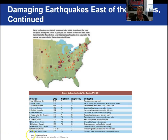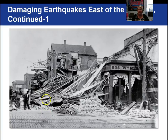Here is a list of 14 historic earthquakes with their dates, intensities, magnitudes, and general information, plotted on a map. There are areas east of the Rockies known for fairly large or moderate-sized earthquakes. This also shows damage from the 1886 South Carolina earthquake.